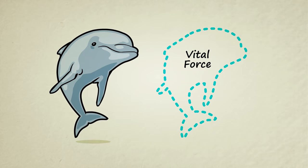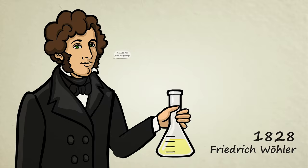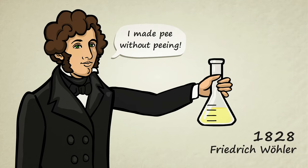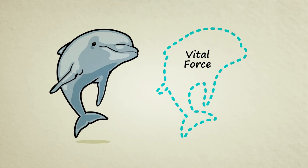In 1828, a chemist by the name of Frederick Wöhler accidentally produced urea in his lab. Urea is one of the main components of urine, one of many chemicals that the scientists of his time thought could only be produced by the vital force acting inside of a living creature.